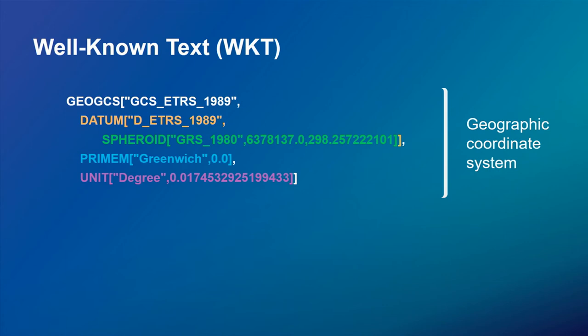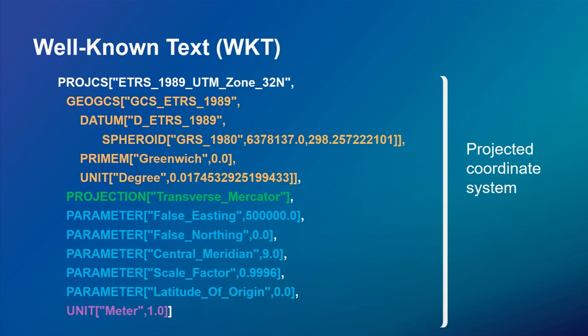Here's the well-known text for a geographic coordinate system. You can see the geographic coordinate system, datum, spheroid, primary meridian, and angular unit — it tries to be as complete as possible so you don't need to look anything up. When you add the projected coordinate system information, you inherit the entire GCS and then add the projection, its parameters, and the linear unit. The only thing a system needs to look up is the projection name itself — it must implement that projection to support the coordinate system.